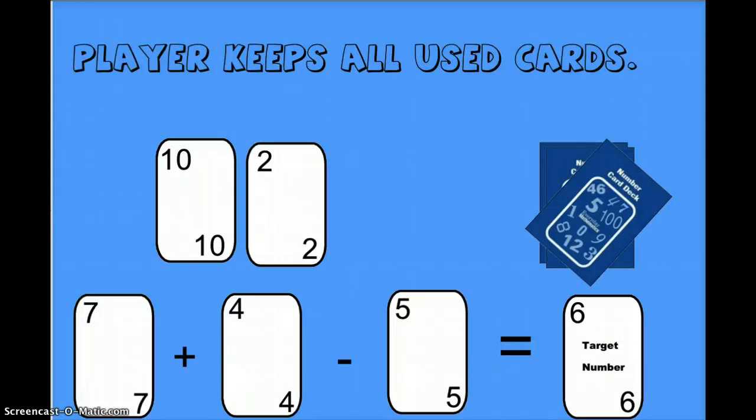There's one more way you could make that 6 I'd like to show you. You could pull down the 7 and the 4. If you add up 7 plus 4, that would make 11, and then if you subtracted 5, that would equal 6. So 7 plus 4 is 11, and 11 minus 5 equals 6.